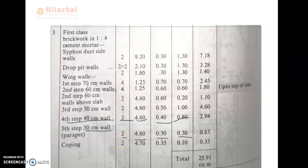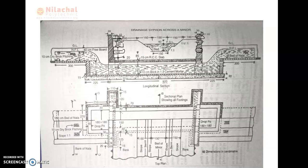Then, after that, we go into the coping. The coping also has two numbers, since the parapet form has two numbers, meaning coping is also two numbers. The length needs to be checked first. The coping has a half offset, which is 5 cm on each side.